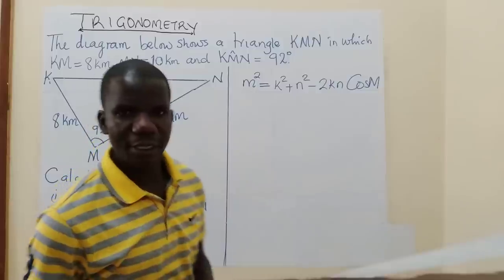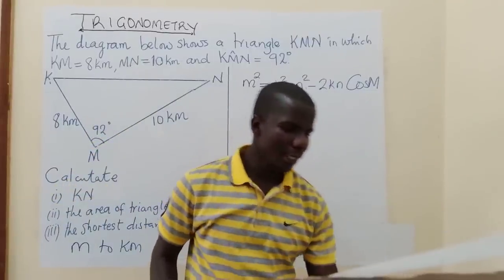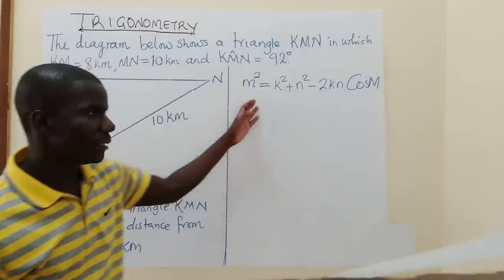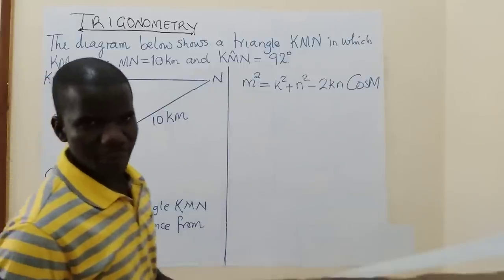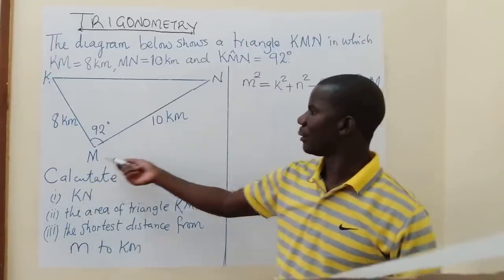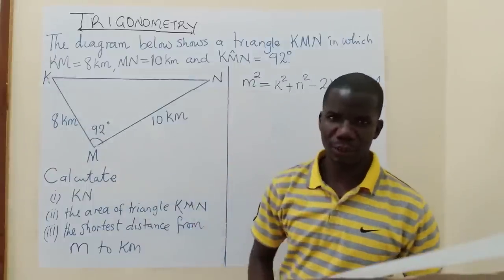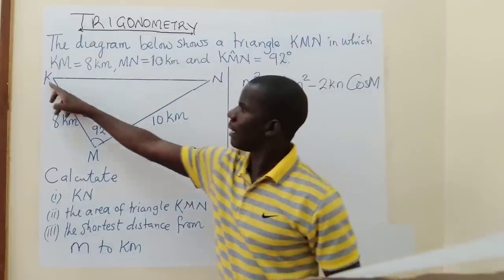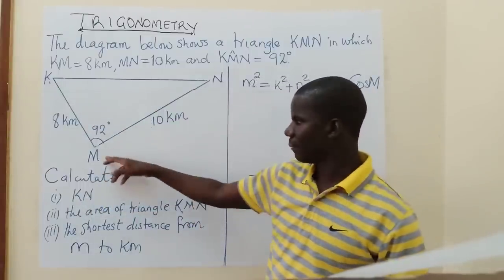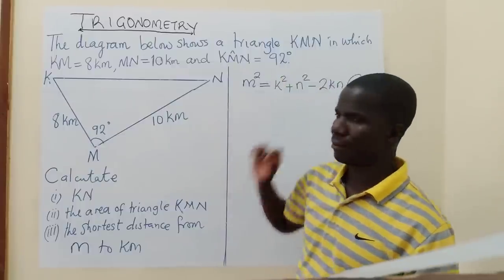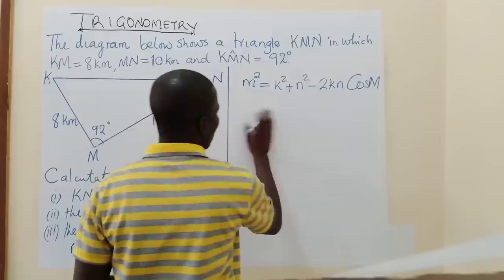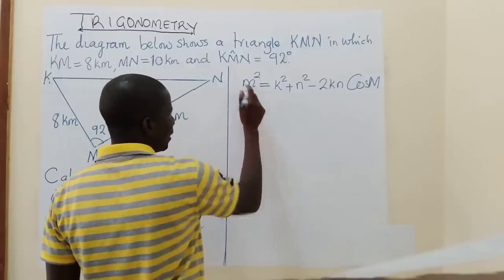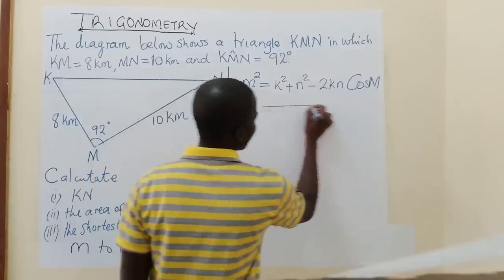In the exam the formula sheet will use the letters A, B, C because those are the common letters. But here we need to use the letters from the question, which are K, N and M. So small letter M squared equals K squared plus N squared minus 2KN cos M. To get M (not M squared), we take the square root of both sides, so small letter M equals the square root of K squared plus N squared minus 2KN cos M.